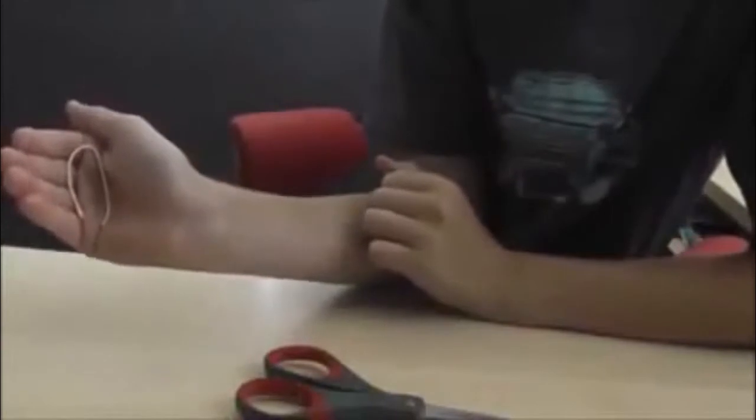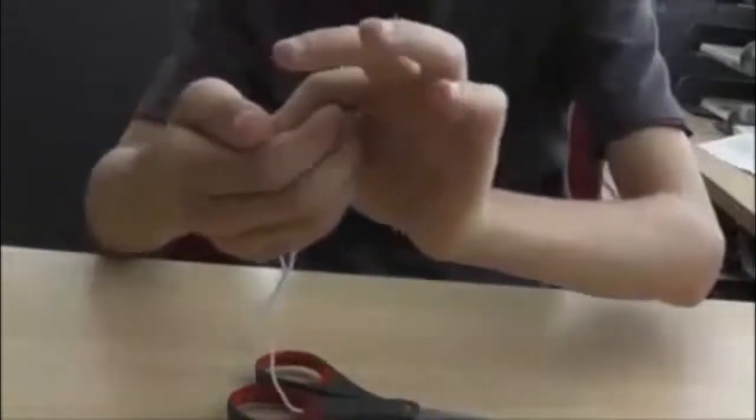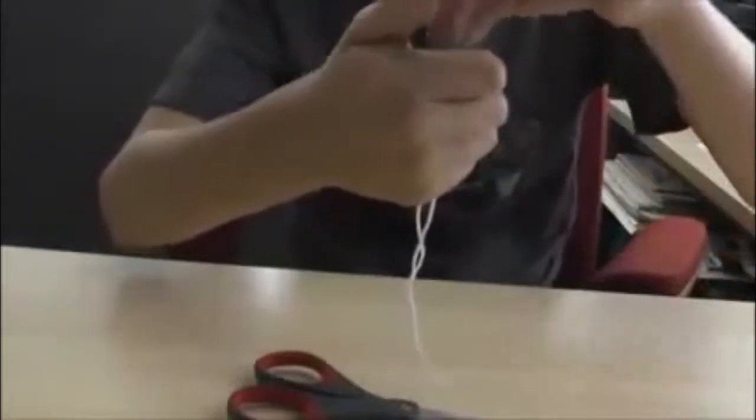All you need is a piece of string, some scissors, and another little piece of string about this big. Before the trick starts, put this in a loop like that and then just hold it like that throughout the trick. Say that this is a normal piece of string you're gonna cut and restore. You put it in your hand like that and then you pull up the bow.